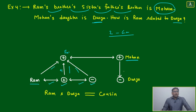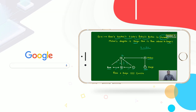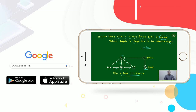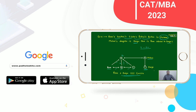Now Mohan's daughter is Durga. How is Ram related to her? No need to say — there are two brothers. Just suppose you and your brother: your kid and your brother's kid — they are cousins.